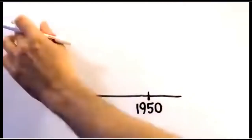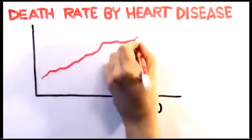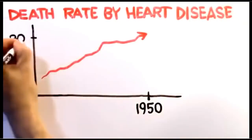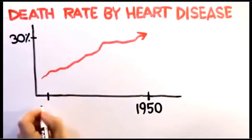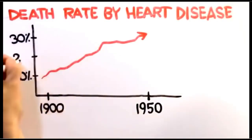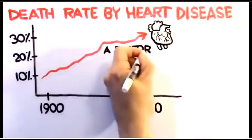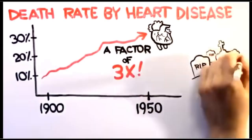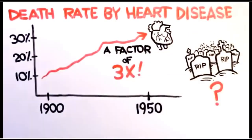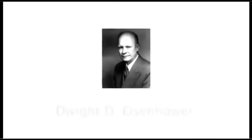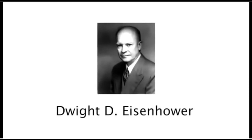The year was 1950. The death rate by heart disease in America had jumped to an astonishing 30%. As far back as the 1900s, it was 10%. In just 50 years, deadly heart attacks had increased by a factor of three times. People were dropping dead at an alarming rate, and no one could figure out why. Then, on September 24, 1955, America's own president, Dwight D. Eisenhower, suffered a heart attack, sending the entire nation into a panic. The crisis was now real.